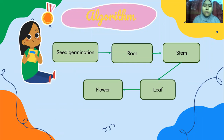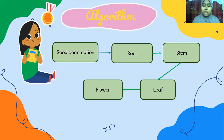Based on my animation, there is an algorithm skill contained in the programming. The algorithm skill that can be found in this animation is a series of step-by-step instructions of the Seed Germination process, perfectly formed from seed germination, root, growth, stems, leaves, and flowers.